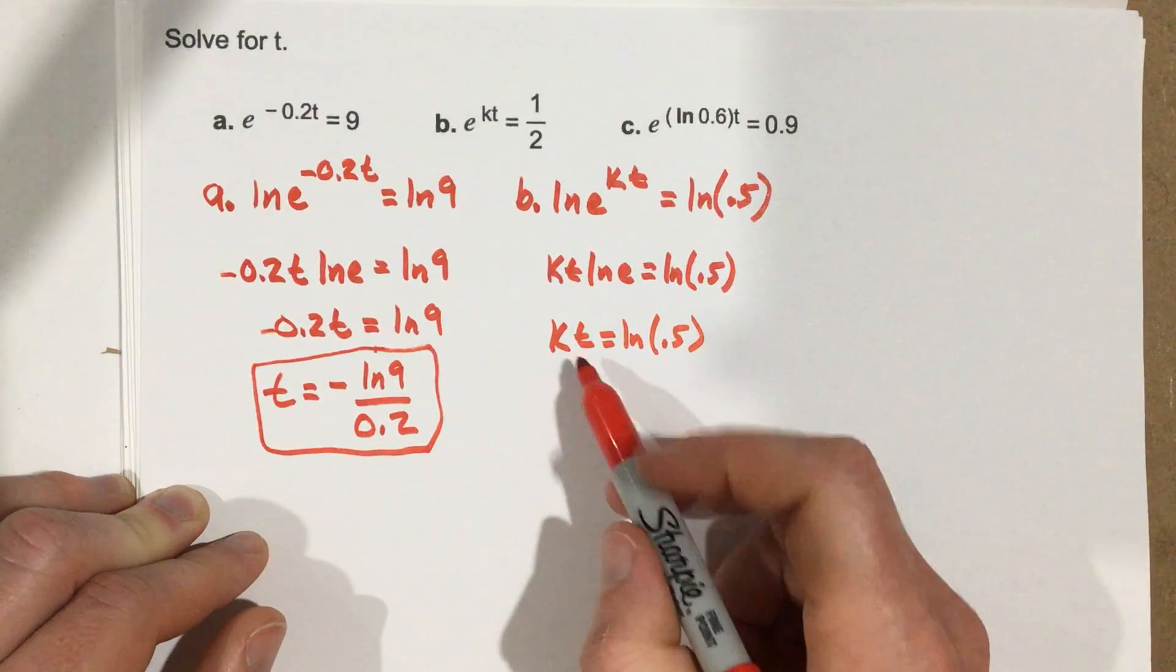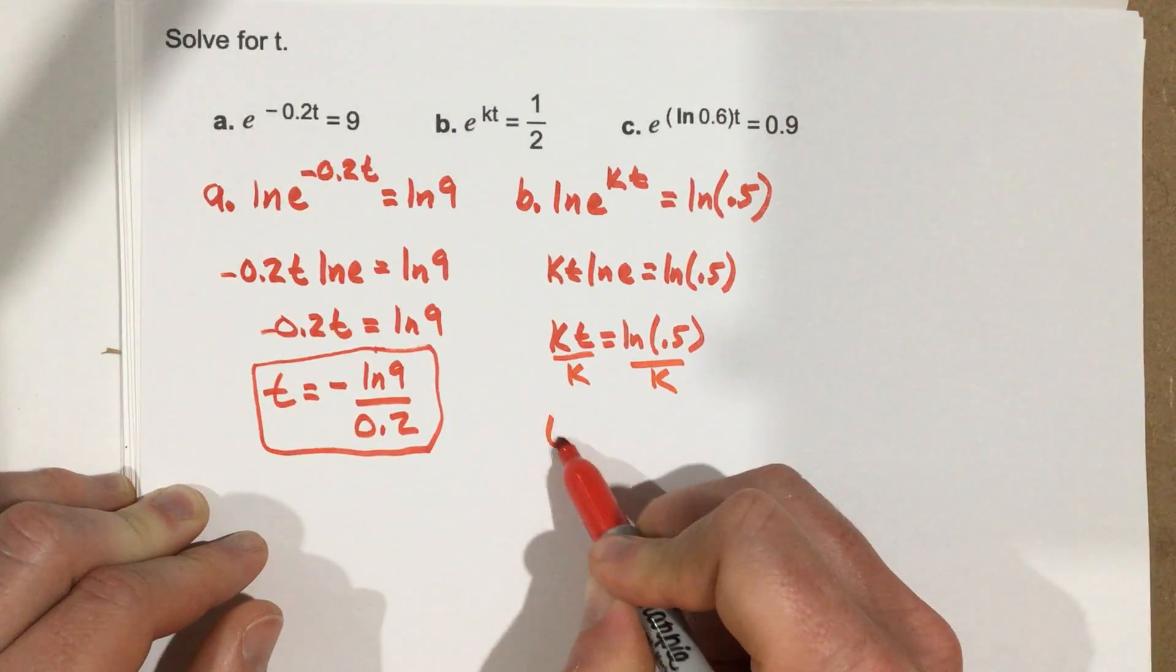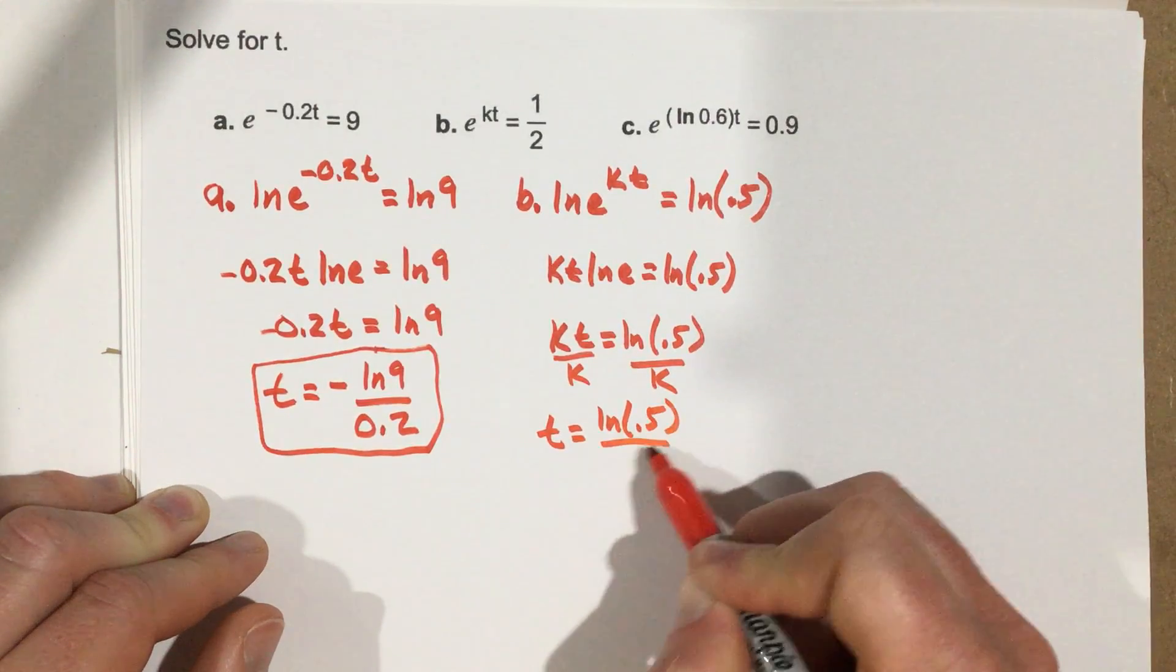Last step, I'm solving for t, so I divide by k on each side, and that's t equals natural log of 0.5 divided by k.